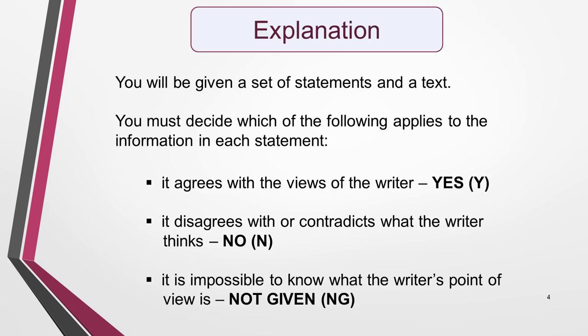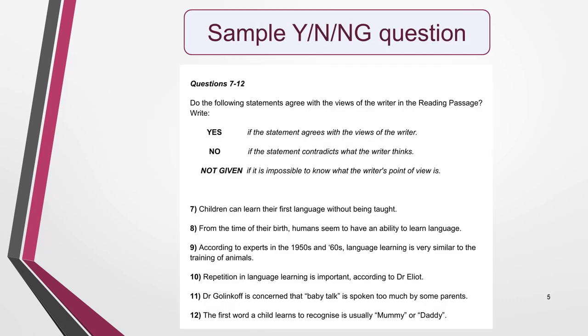First, let's look at what you have to do for this type of question. You will be given a set of statements and a text, and you must decide which of the following applies to the information in each sentence. If it agrees with the views of the writer, the answer will be yes. If it disagrees or contradicts what the writer thinks, the answer will be no. If it's impossible to know what the writer's point of view is, the answer will be not given.